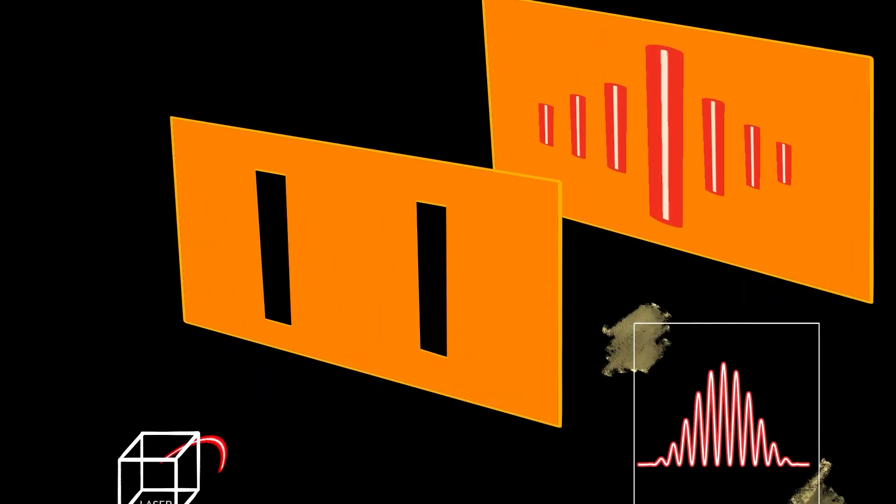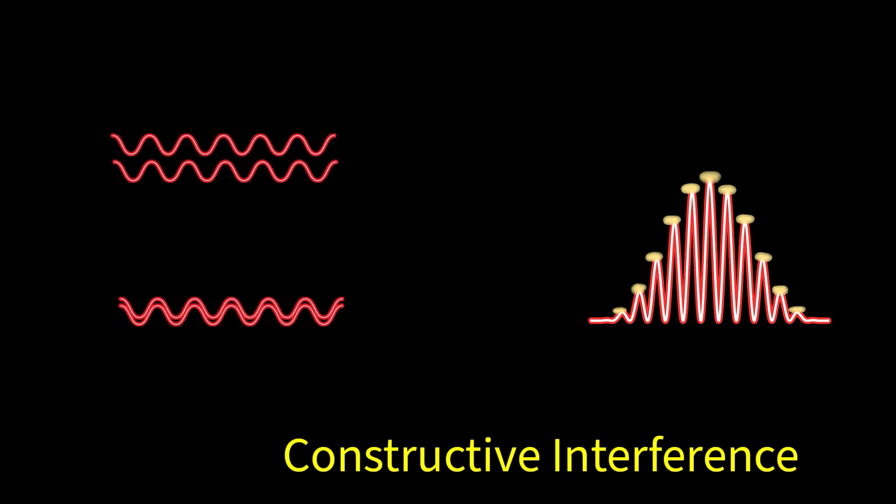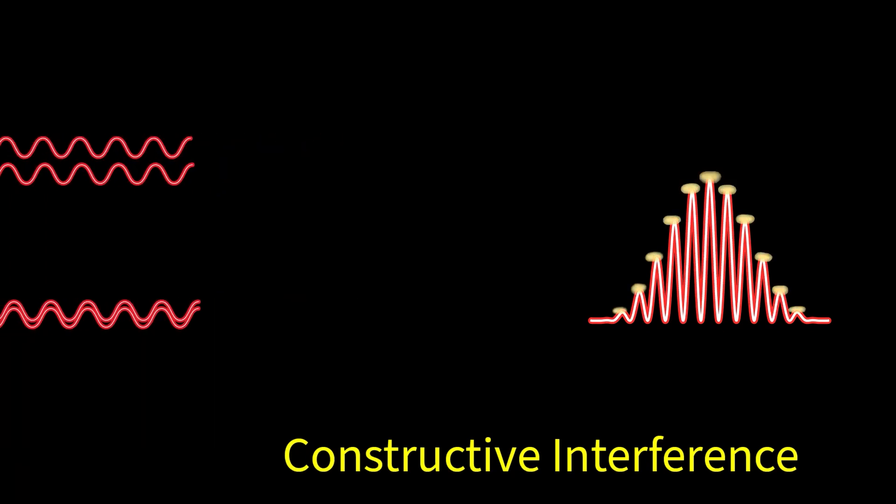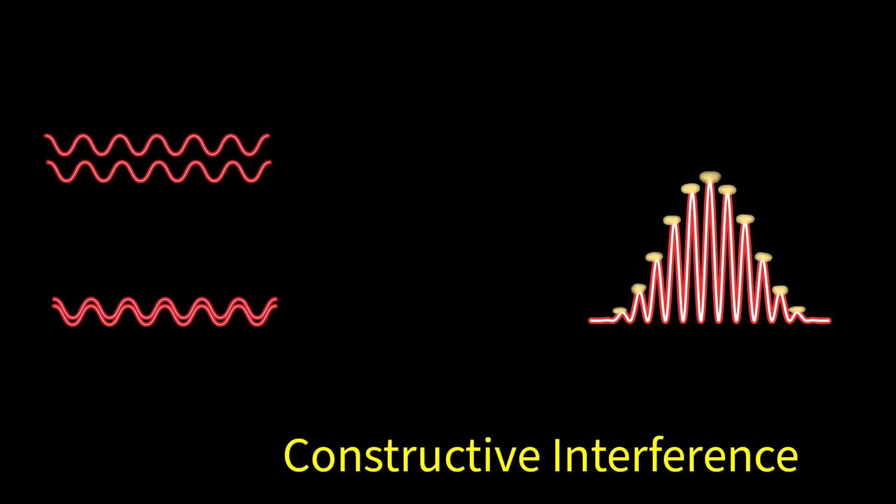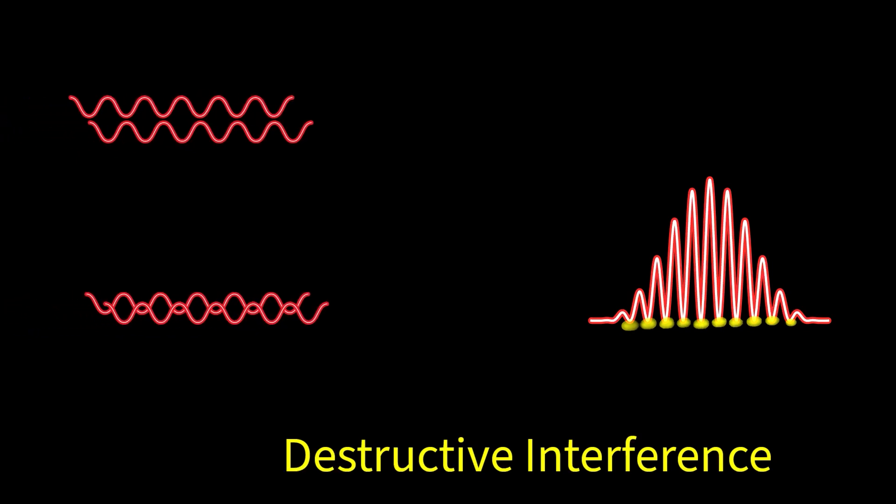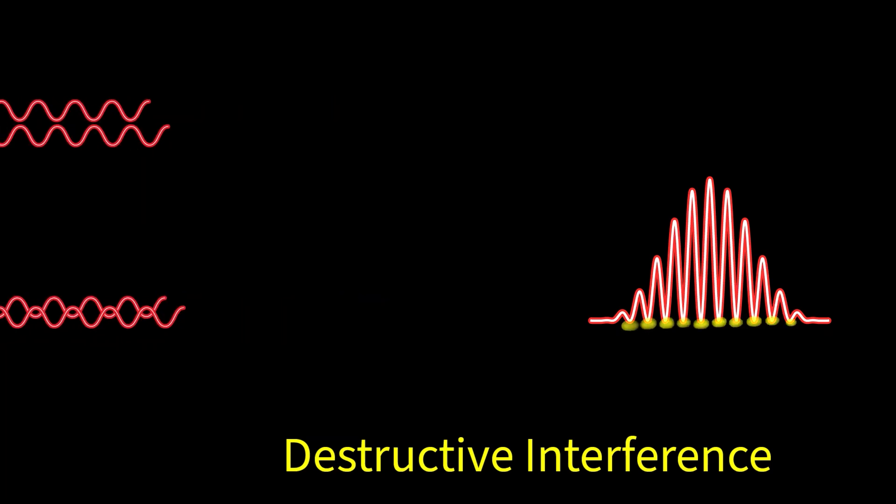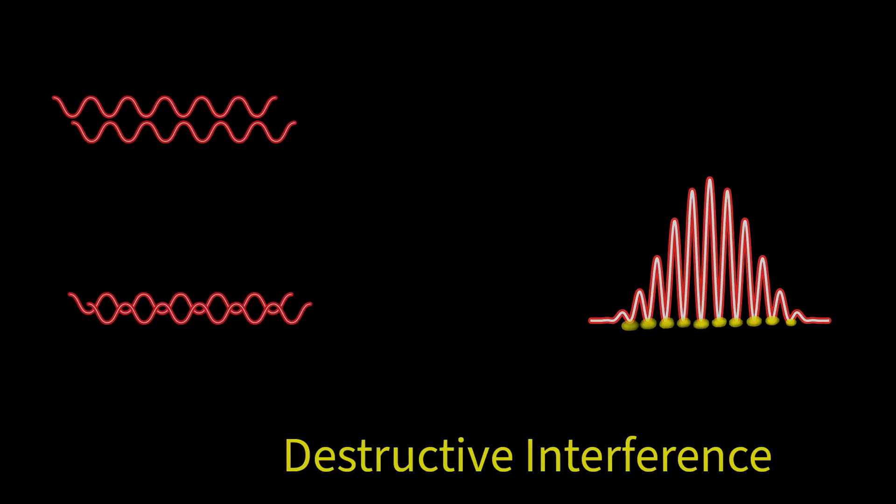Young's double slit experiment demonstrated this principle spectacularly, showing that light could produce interference patterns characteristic of waves. When the crest of one wave meets the crest of another, they add up to make a brighter, bigger wave. This is called constructive interference. On the other hand, when the crest of one wave meets the trough of another, they cancel each other out, creating a dark spot. This is called destructive interference.